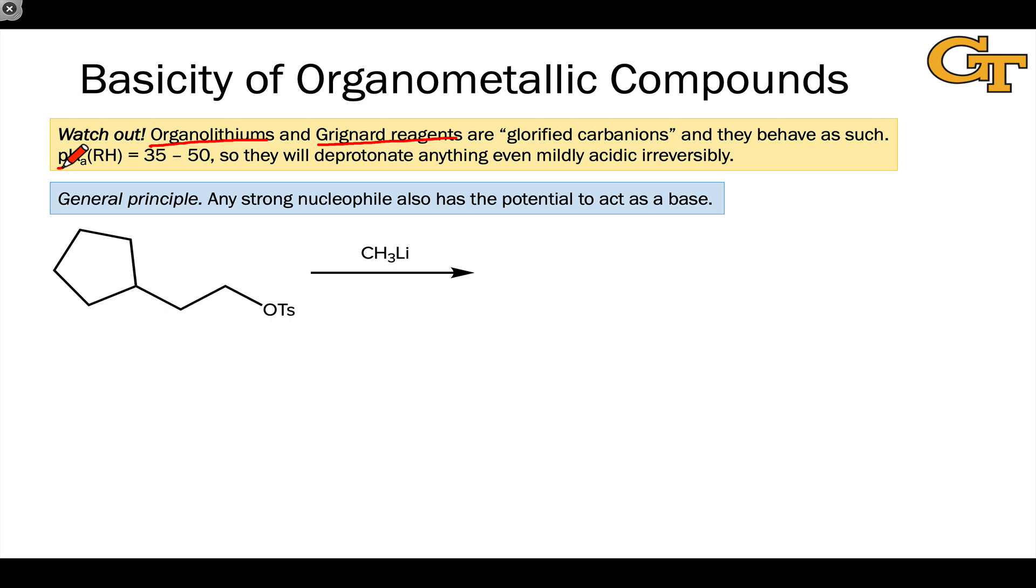For example, if we look at the pKa of their conjugate acids, which is something like an alkane, alkene, aromatic, or alkyne, these are very high pKa values, and they'll deprotonate anything with a pKa less than this range.